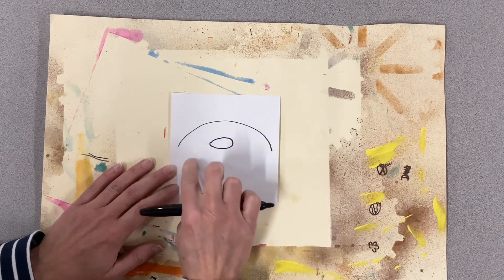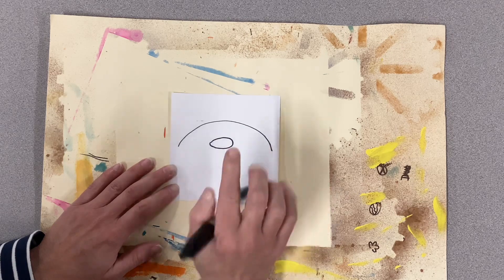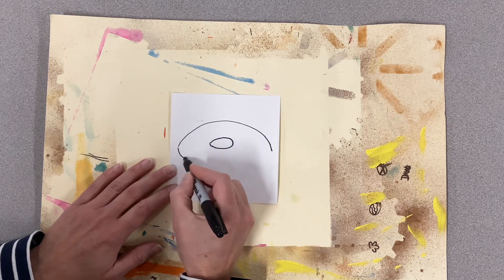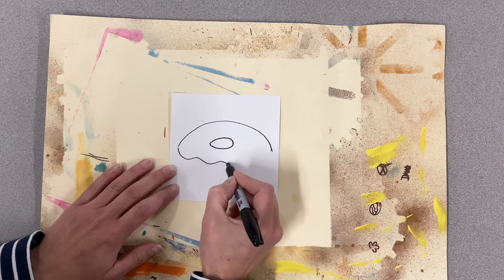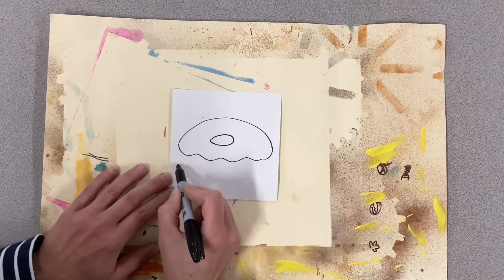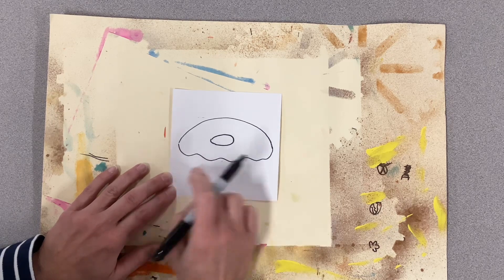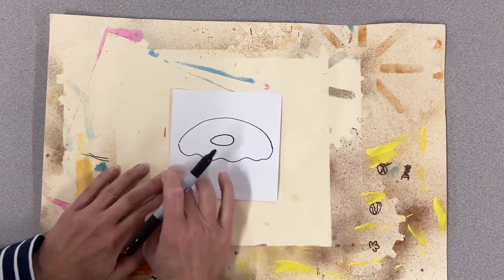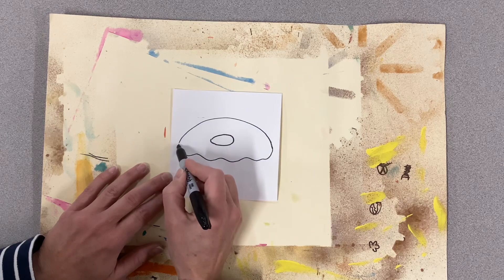And now the bottom part, we're going to do the glaze drizzle. So coming down, I'll do a wavy line. And now we're going to do the base of the donut, so we're going to do two vertical lines coming down and a curved line going across to the bottom.